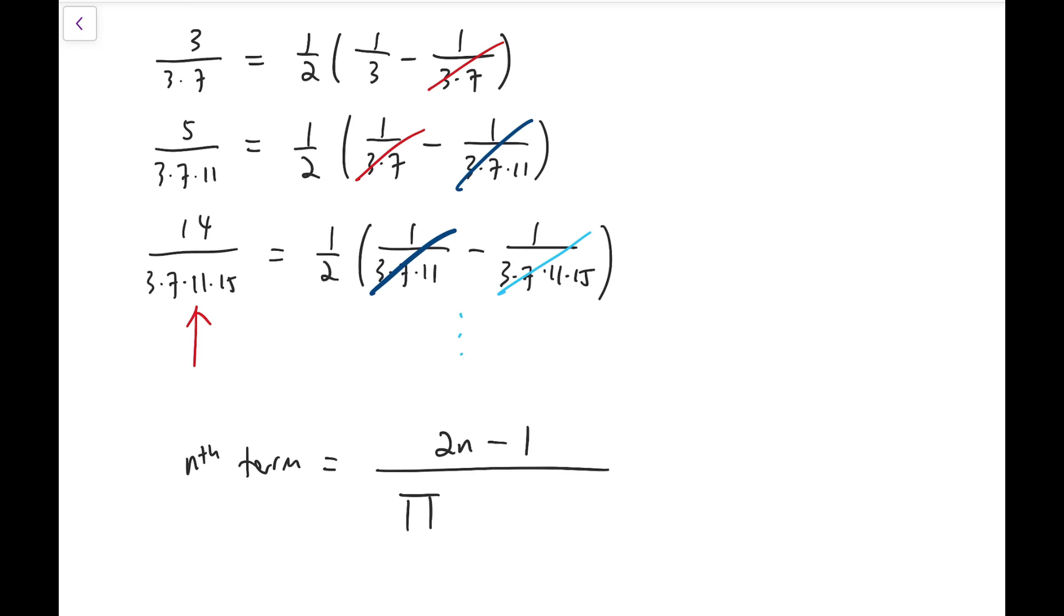So, it's the product of the first n terms, and the general term should be 4k minus 1.